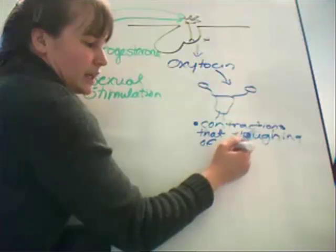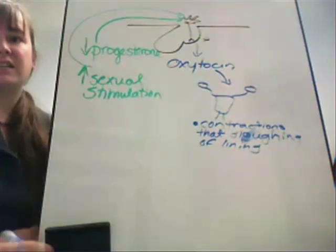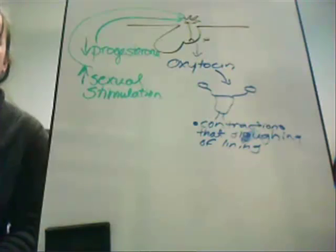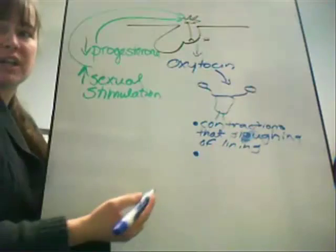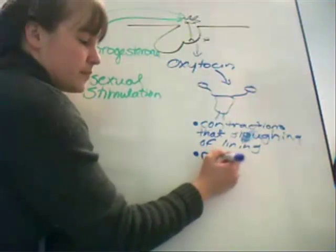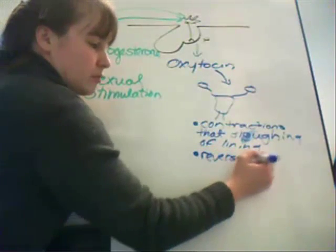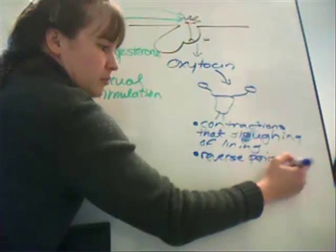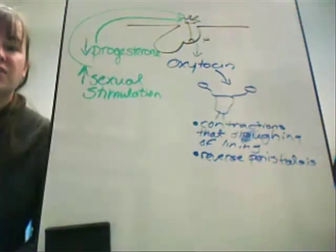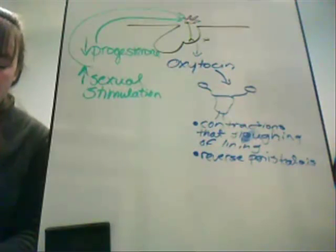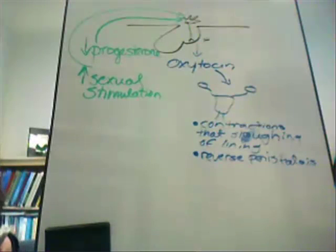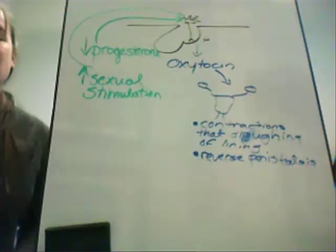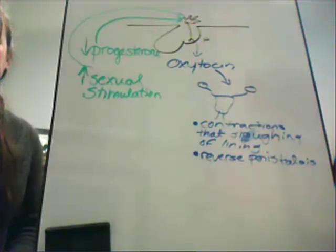Those contractions cause sloughing of the lining, which is the menstruation period. During sexual stimulation, we get reverse peristalsis, which is designed to help draw sperm into the female system and increase the likelihood of pregnancy.